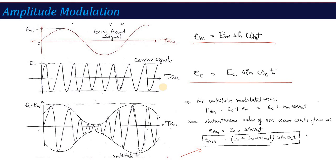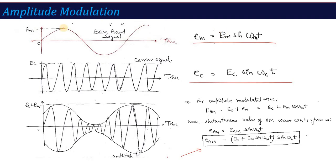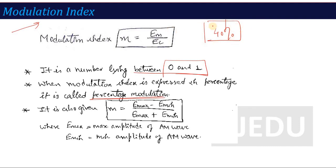Now let's discuss mathematical parameters of the amplitude modulated wave. The first parameter is the Modulation Index. Modulation Index is defined as the ratio M = Em / Ec, where Em is the maximum amplitude of the message signal and Ec is the maximum amplitude of the carrier signal. It is a number between 0 and 1. When expressed as a percentage it is called percentage modulation — for example 40% means the carrier is 40% modulated with respect to the message signal.